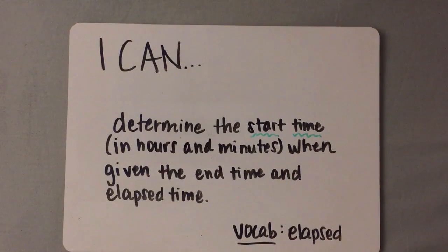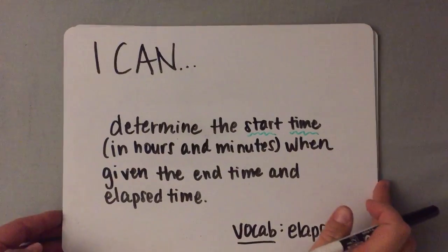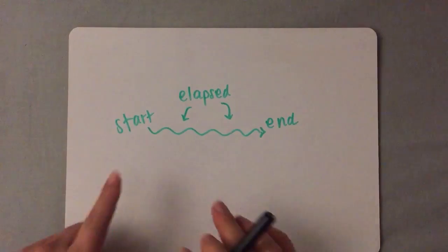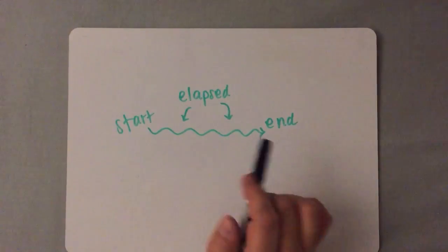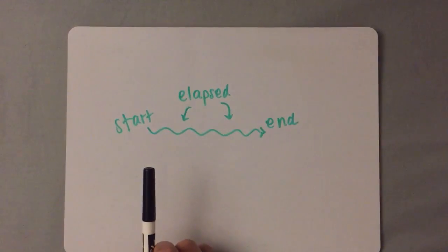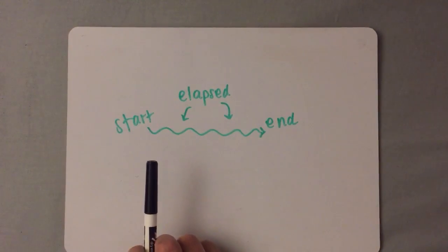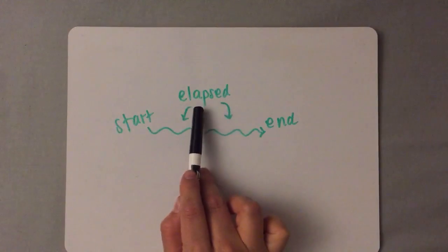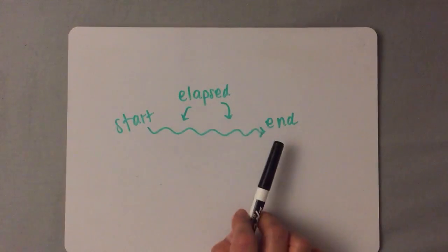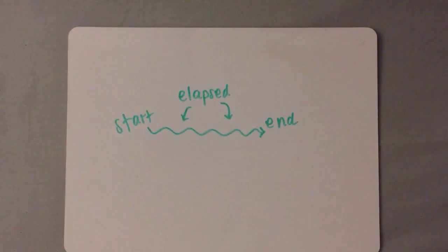The vocabulary you need to know is 'elapsed.' As a refresher, when you're given a start time and end time, you need to find the elapsed time — that's the time in between the start and end time. When you're given the start time and elapsed time, you can find the end time. However, when given the elapsed time and end time, you need to find the start time.